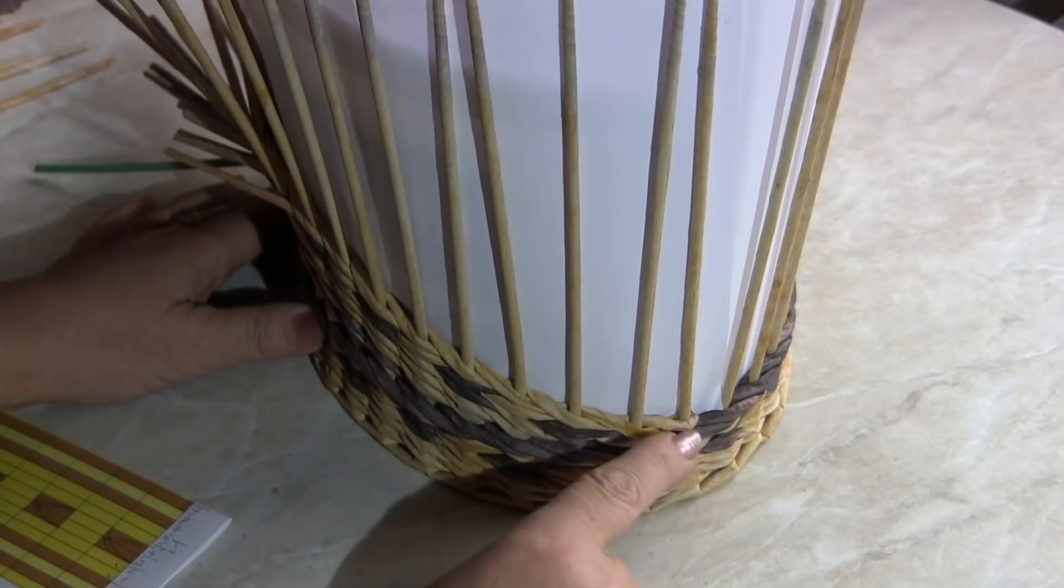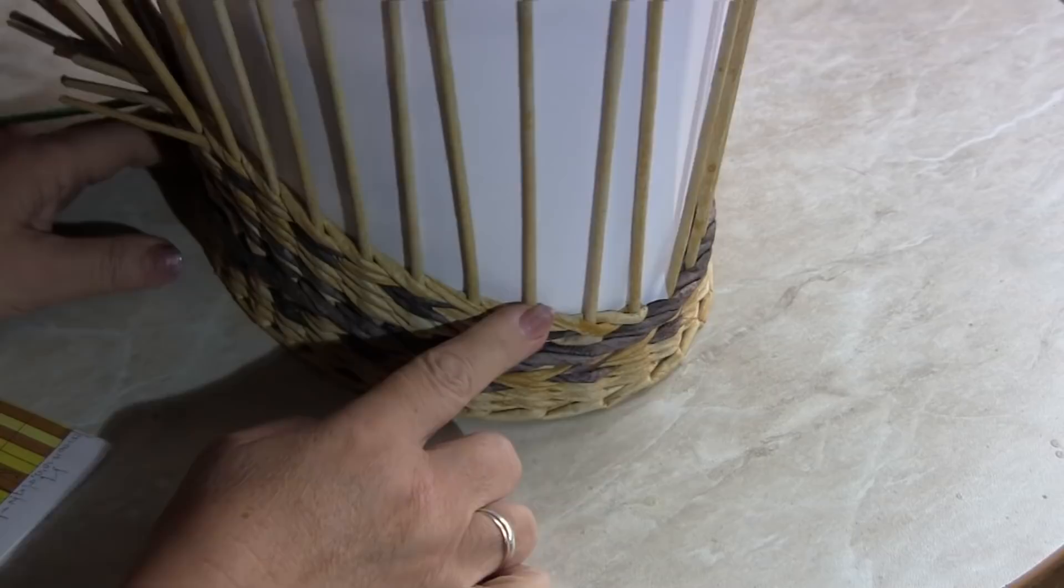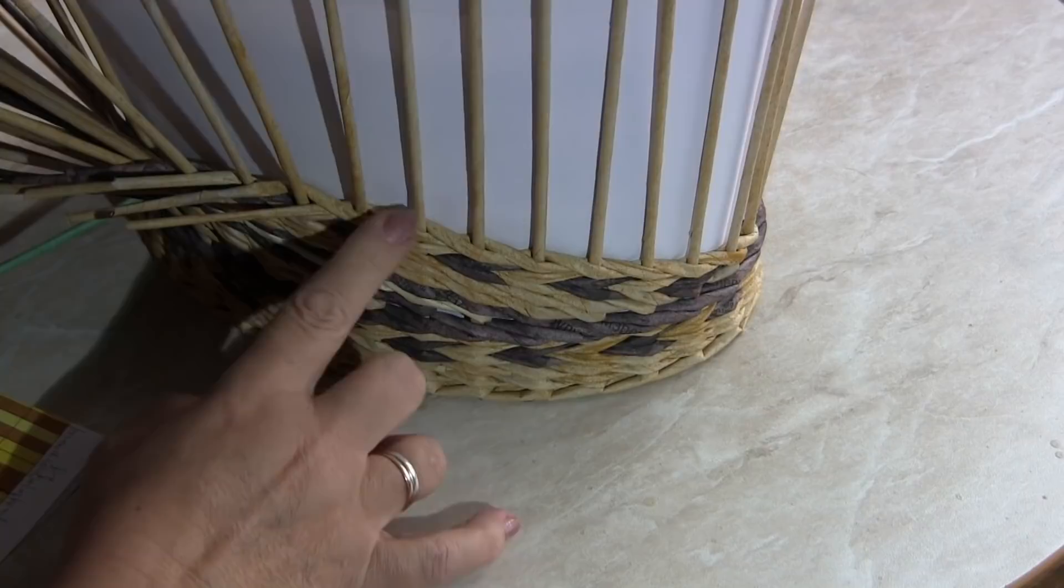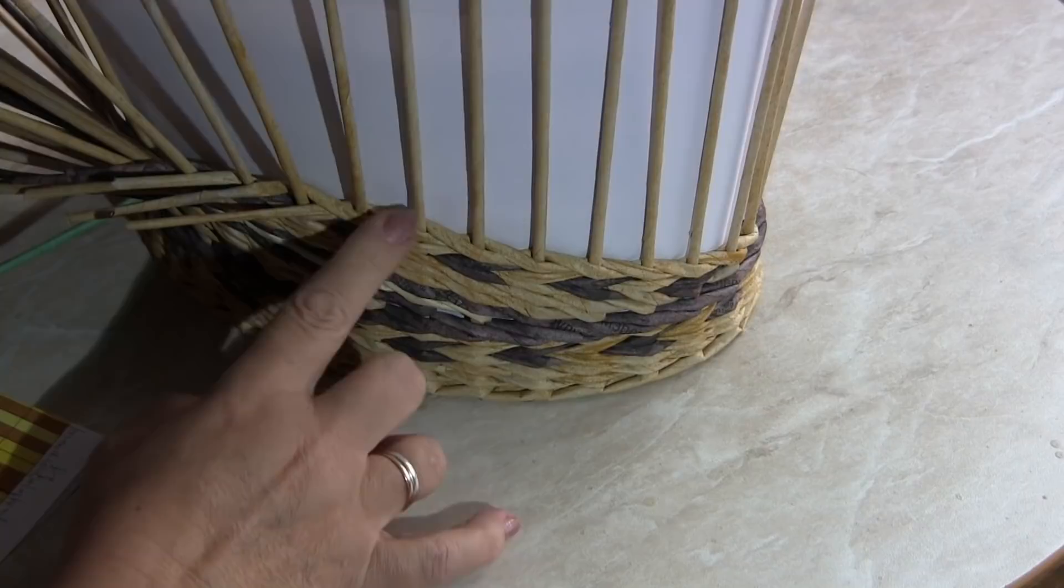Look, here is the last row I've attached to the pole. Let's count starting from this very pole: 1, 2, 3, 4, 5, 6, 7, 8, 9, here is the 10th pole.